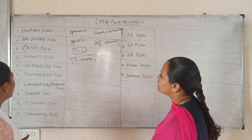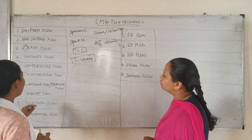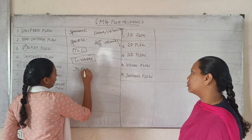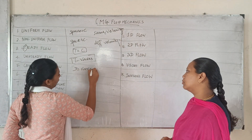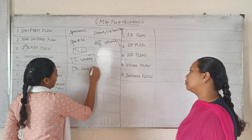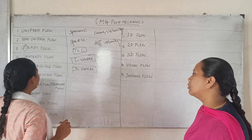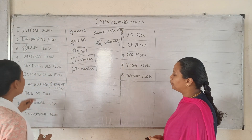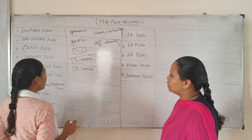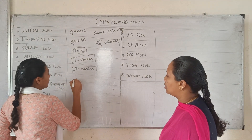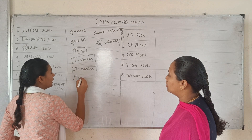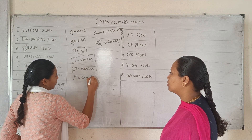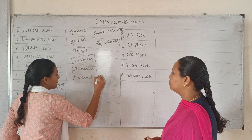Compressible flow — density varies. That means it is compressible flow. Incompressible flow — density remains constant. That means it is incompressible flow.